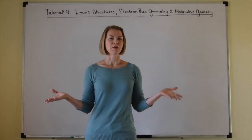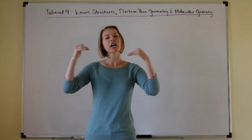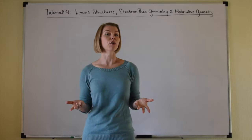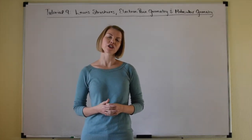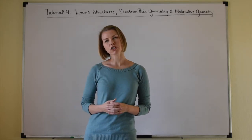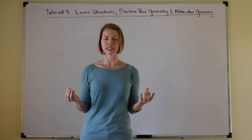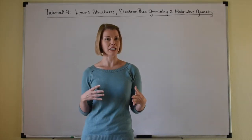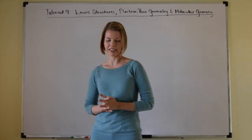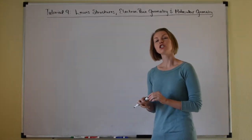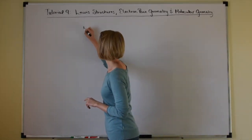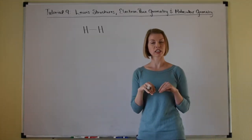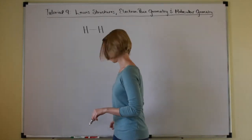We already know that molecular compounds form when atoms share their valence electrons to form covalent bonds. We know how to write formulas and we know how to write out full names for molecular compounds. So now we're ready to learn how to draw Lewis structures, which will represent the way in which those valence electrons are shared between atoms to form covalent bonds. Atoms can share just two electrons and form just a single bond, like what happens when two atoms of hydrogen share their two valence electrons to form one single bond in the diatomic molecule hydrogen.